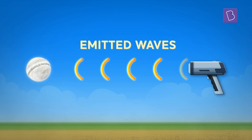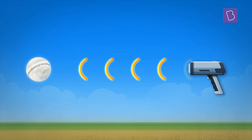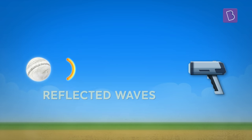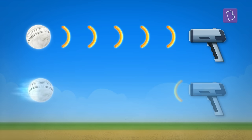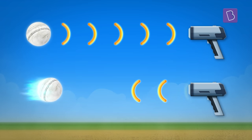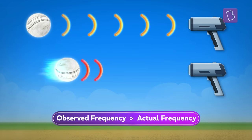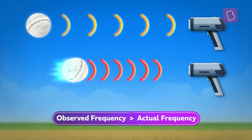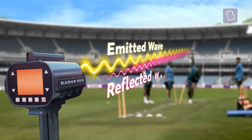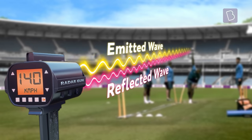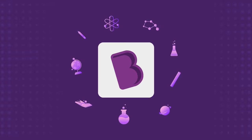The microwaves produced by the gun have a certain frequency. When these waves interact with a stationary ball, the waves reflect back with no change in frequency. But when the ball is traveling towards the gun, the frequency of the reflected wave appears to be increased. And this change in frequency between the emitted and reflected wave is detected by the radar gun to bring live speeds at the speed of now.